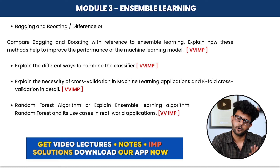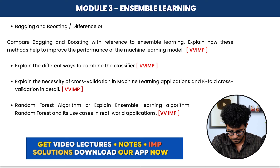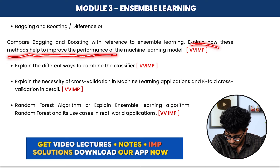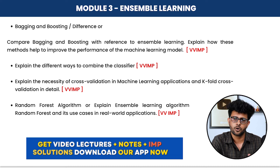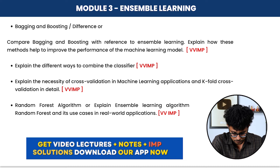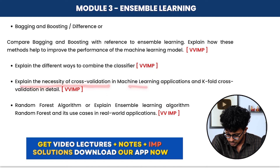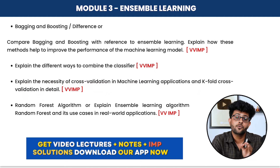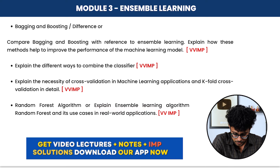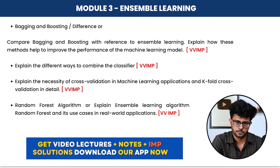Module 3 has only four important questions. First: explain bagging and boosting, and ensemble learning — you may be asked to compare bagging and boosting with reference to ensemble learning and explain how these methods improve machine learning model performance. Also important: different ways to combine classifiers, the necessity of cross-validation in machine learning, and k-fold cross-validation in detail — this has appeared in the past two to three papers. Also cover random forest algorithm and its real-world use cases.